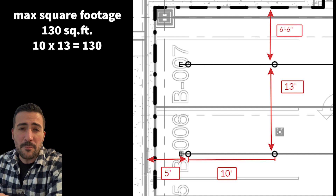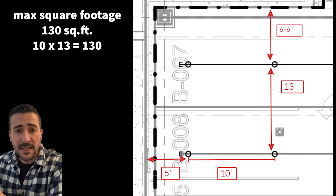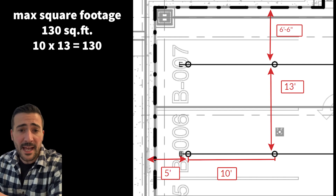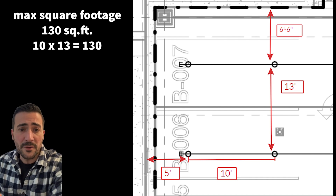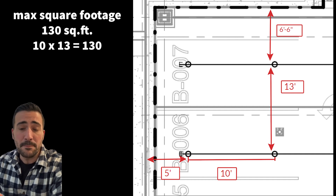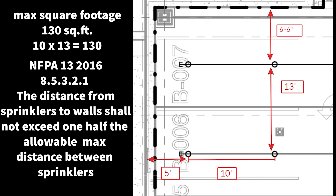Let's take a look at this example to see how max distancing on ordinary hazard works. 10 times 13 is 130, so I space these heads 10 feet by 13 feet, which is 130 square feet — and that's the maximum square footage for the standard spray upright and pendant in ordinary hazard. Then you would use NFPA 13's installation requirements: the distance from the sprinkler to the walls shall not exceed one half the allowable max distance between sprinklers.